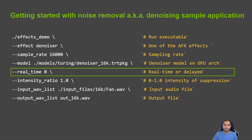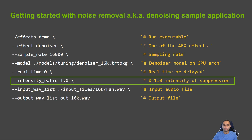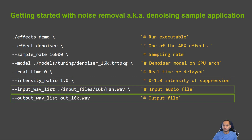Next is real_time or delayed effect. Intensity ratio is a float value ranging from 0 to 1, where a higher value indicates stronger suppression. A value of 0 means no effect will be applied. Finally, pass the input and the output file names.